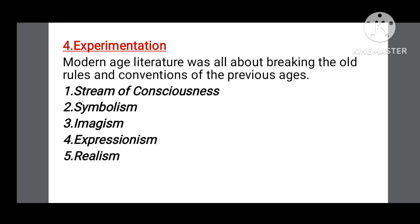The fourth characteristic is experimentation. Modern age literature was all about breaking the old rules and conventions of previous ages. Many new techniques emerged during this time, such as stream of consciousness, symbolism, imagism, expressionism, and realism. These techniques were introduced in literature — writers used them in their works. The stream of consciousness technique was used by Virginia Woolf and Henry James, while symbolism was mostly used by T.S. Eliot and Ezra Pound.